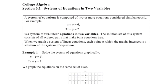In this college algebra lesson for unit 6, we're going to start talking about solving systems of equations in two variables. There are a few different ways we can do that — algebraically and graphically — but graphically isn't always the best way, especially if the lines don't meet in a clean crosshairs sort of way. A system of equations is composed of two or more equations considered simultaneously. For example: x plus y is 6, and 3x minus y is 2.